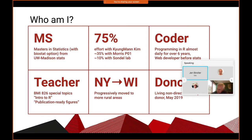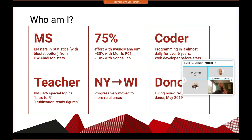These numbers — 35% with Zach Morris's PO1 and about 10% with Sandel's lab — I always think that Kyungman is trying to ask for more and more of my effort on these things. It might be 15% with Sandel's lab, but regardless, whenever we check every six months, it seems to be just about right. Always trying to ask for more with this group.